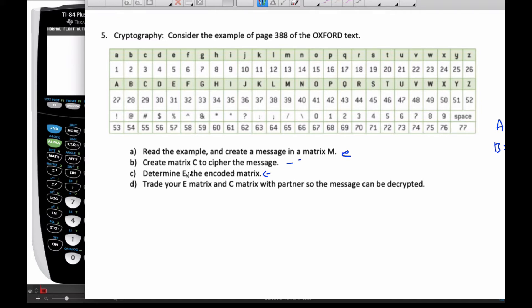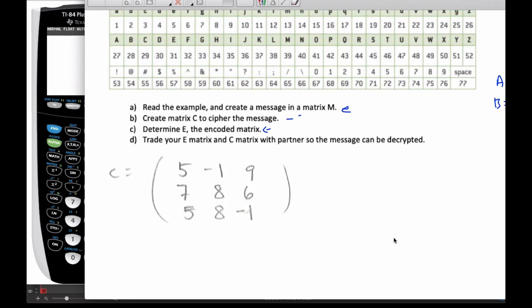Now that you're back, I've actually done it as well so let's see if you can do mine. Here is my cipher matrix C, there's my C matrix, and here is my encoded matrix E. I want you to undo it.